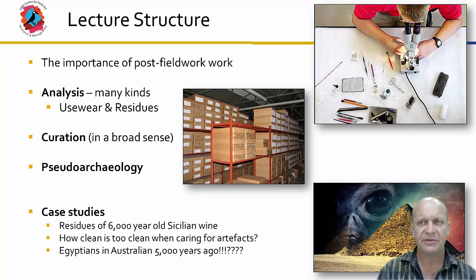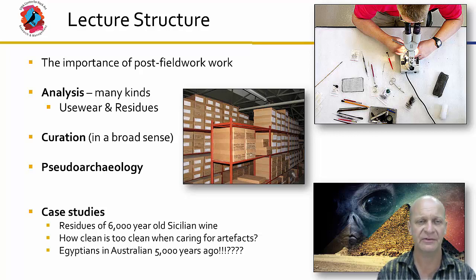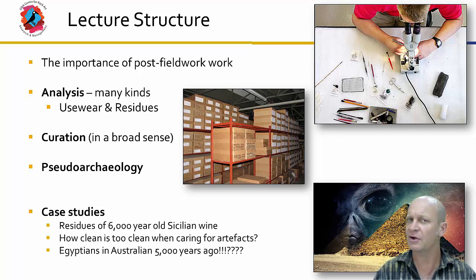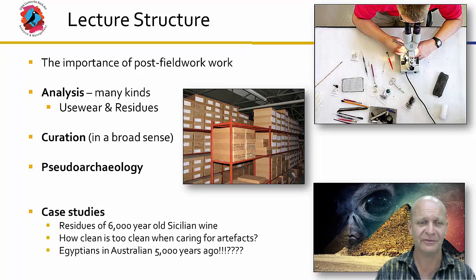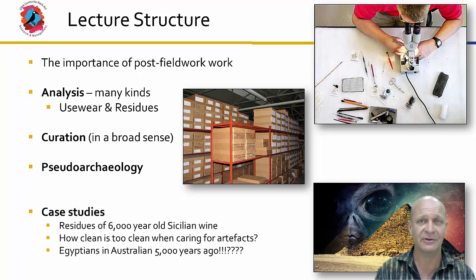For today we have essentially three main parts. There's a bit about the importance of post-fieldwork work. Then we get into analysis — there are hundreds of different kinds — and we'll look at use wear and residue in slightly more depth with different case studies. We look broadly at curation and conservation. And then we end with pseudo-archaeology, including case studies: 6,000-year-old Sicilian wine, whether to clean or not to clean artifacts, and the Gosford or Karyong hieroglyphs — did we have Egyptians in Australia 5,000 years ago? The short answer is no.